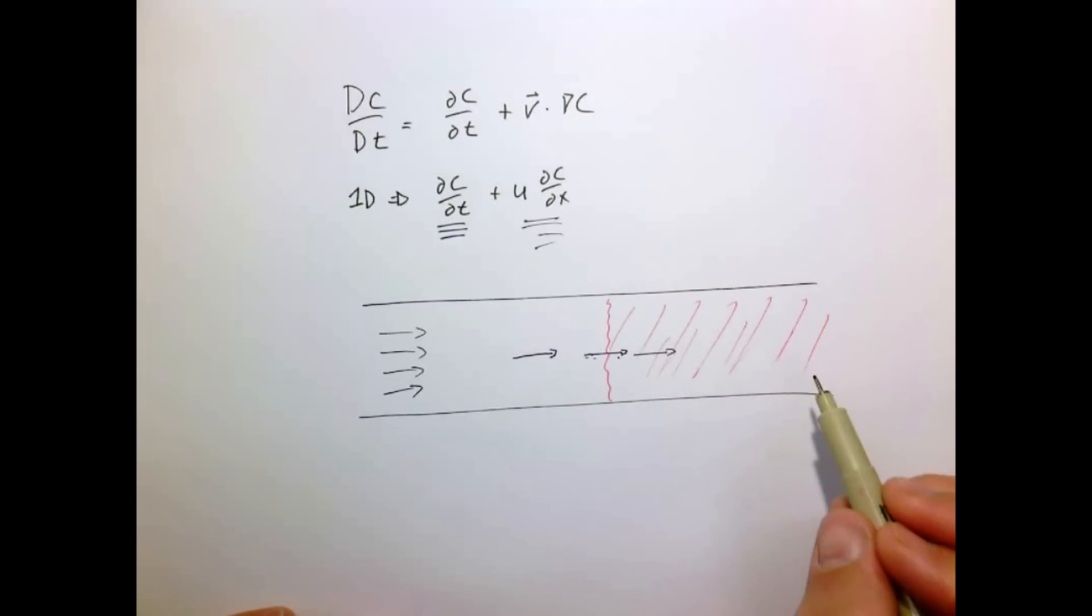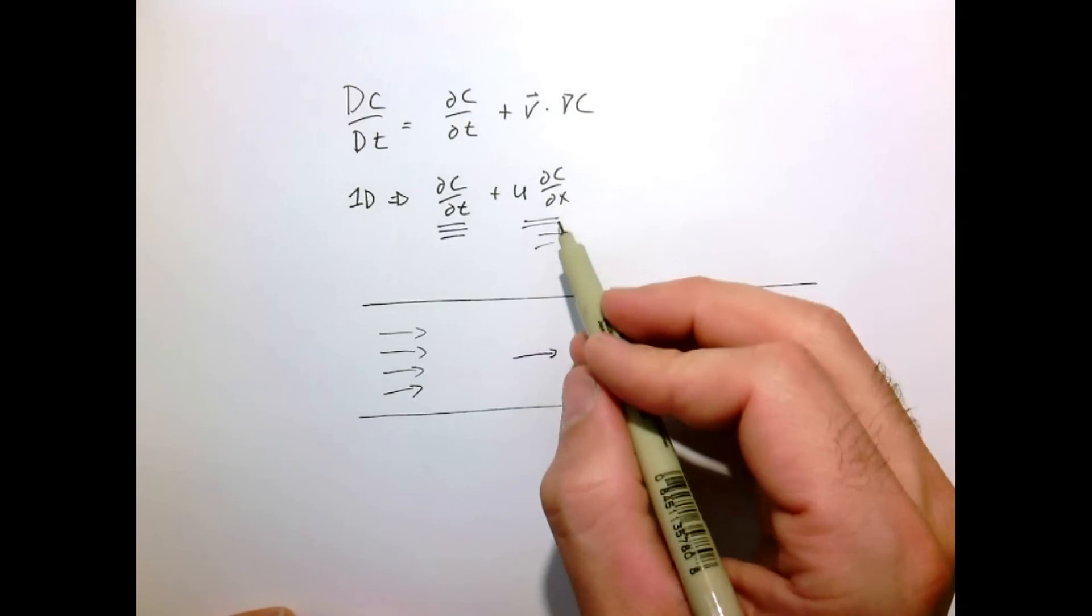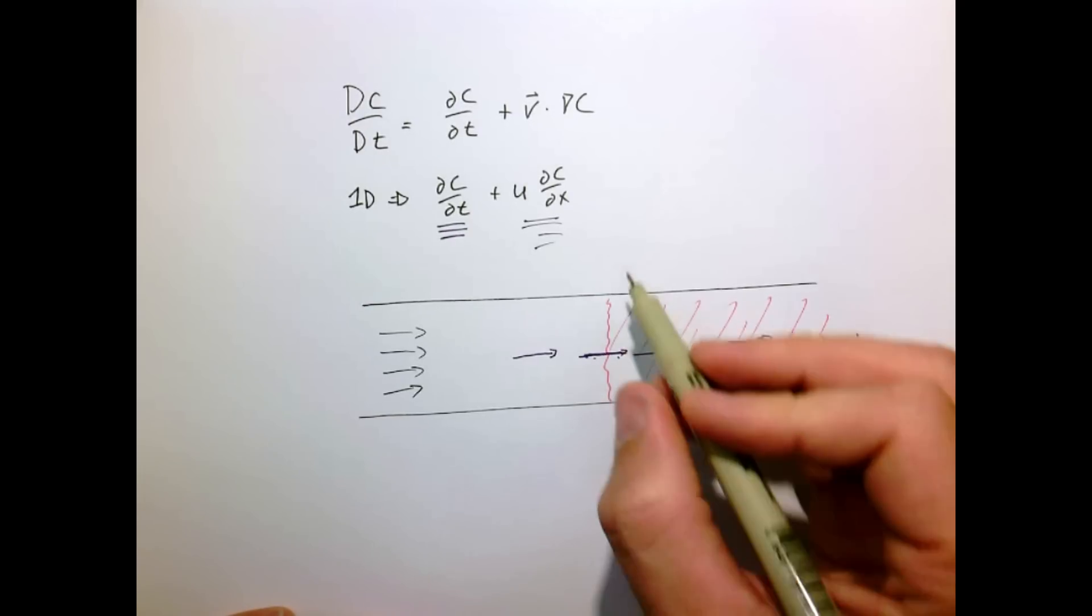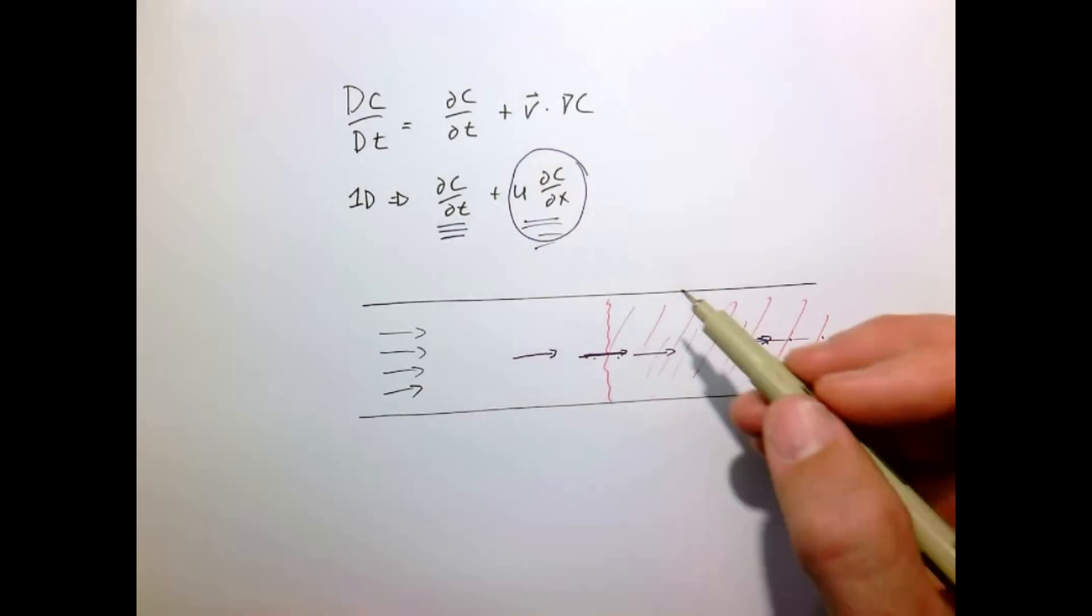When we're moving through here, if the concentration is constant with respect to x, as we move through we sense no change in time, because the concentration here, here, and here is the same. It's only when we pass through a gradient. So that's what this term means.